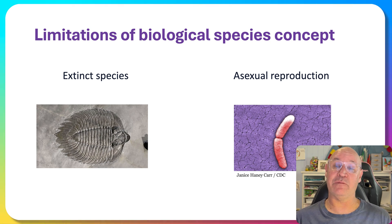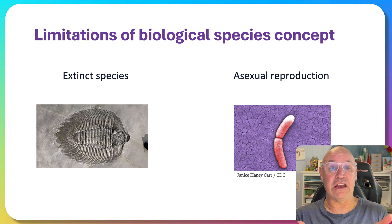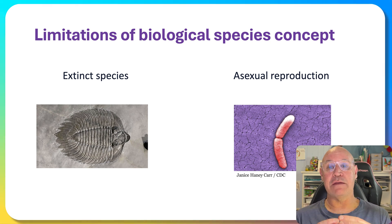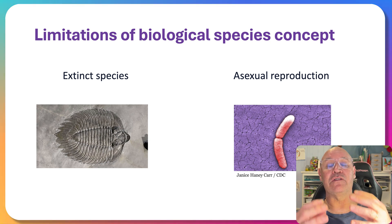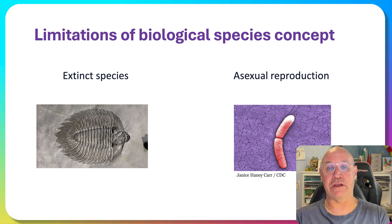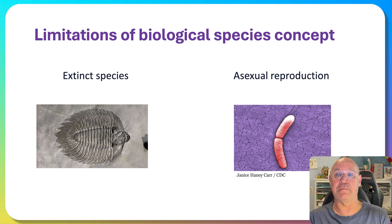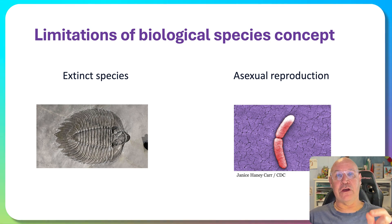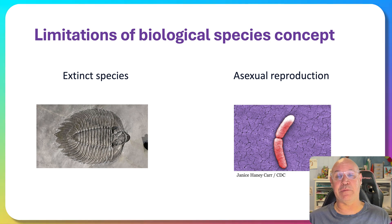What happens when we have extinct species that we cannot observe or test for reproductive compatibility? It's impossible. Also, organisms like bacteria that reproduce asexually — we're not able to determine if they're the same species using the biological species concept, because they don't interbreed. They reproduce asexually through binary fission.